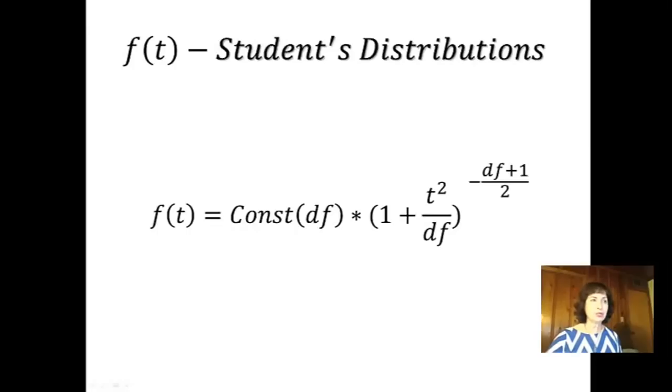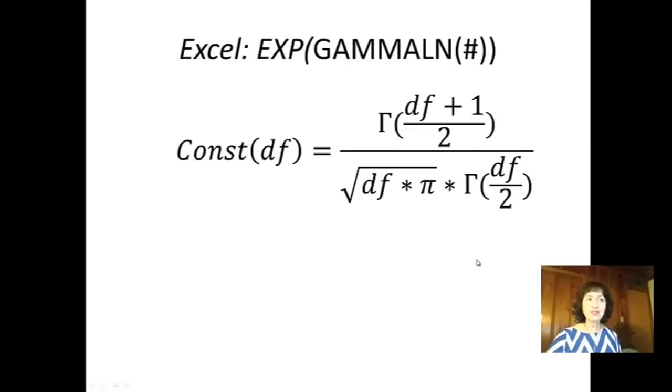Student t-distribution is a very simple formula. I would say if you put one constant in front that depends on the degree of freedom, then it depends on the standardized t-score as t-square to the power of a function that depends on degree of freedom, df, plus 1, divided by 2. This is the constant.